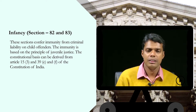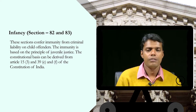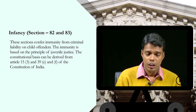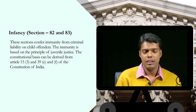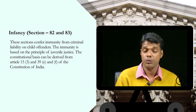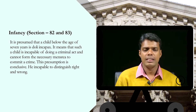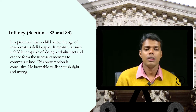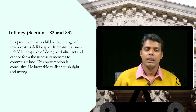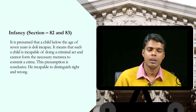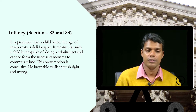The immunity is based on the principle of juvenile justice. The constitutional basis can be derived from Article 15(3), 39(e) and (f) of the Constitution of India, all of which mandate that the state can enact special legislation for the protection of children. It is presumed that a child below the age of 7 years is doli incapax, meaning such a child is incapable of doing a criminal act and cannot form the necessary mens rea to commit a crime. This presumption is conclusive — the child is incapable of distinguishing right from wrong.